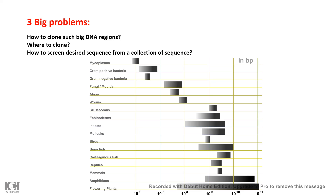There are three basic problems: how to clone such a big genome, where to clone it — what are the appropriate vectors useful for cloning such a huge quantity — and even if we clone it successfully, how we can identify our sequence of interest from this library. Screening of this library was another challenge.